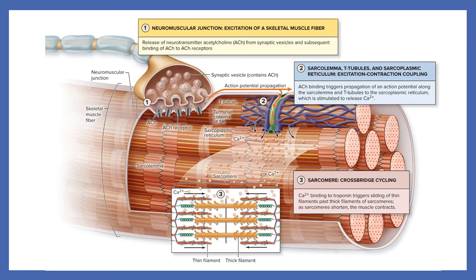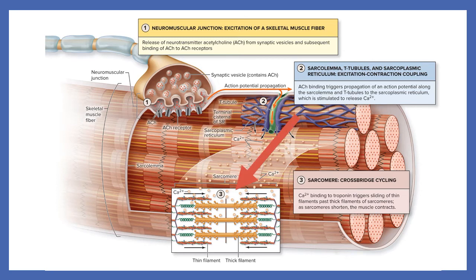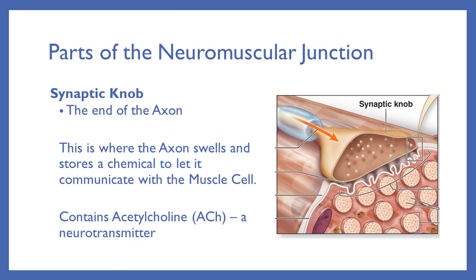Here's a drawing of what that looks like in greater detail. Our motor neuron is coming in, and it swells when it meets the muscle fiber cell. When the motor neuron brings that impulse, it travels into the cell and signals for the release of the calcium that then causes those individual myofilaments to contract. The neuromuscular junction is the place where the nerve and the muscle communicate. The synaptic knob is the swelling at the end of that motor neuron. The specific part of the neuron that sends the impulse is called the axon, so the end of that axon is called the synaptic knob, and it's where the axon swells and stores a chemical to communicate with the muscle cell.